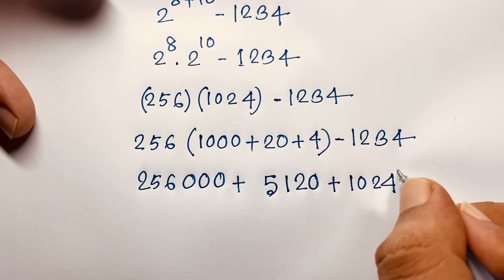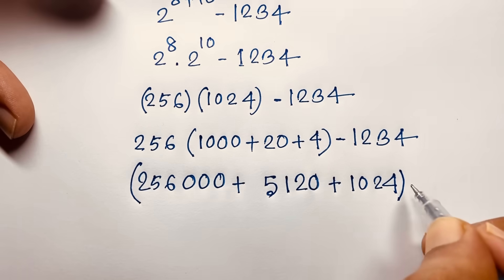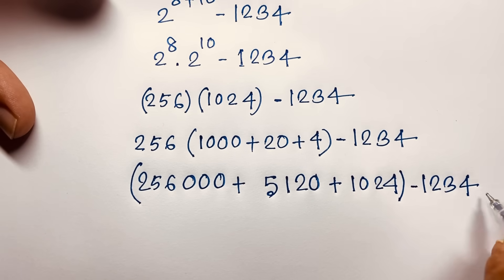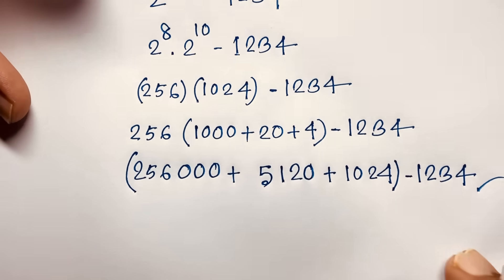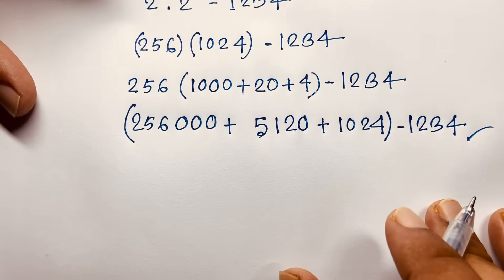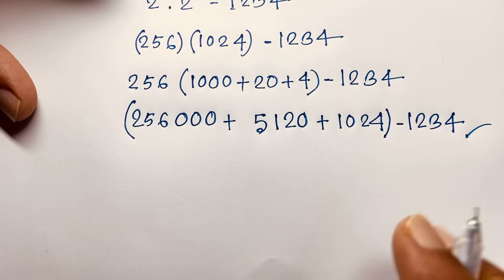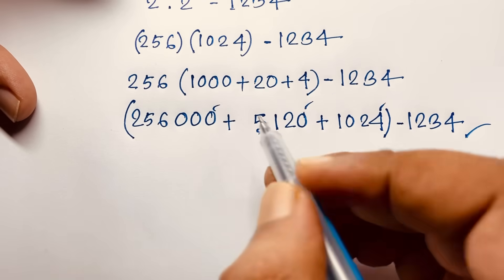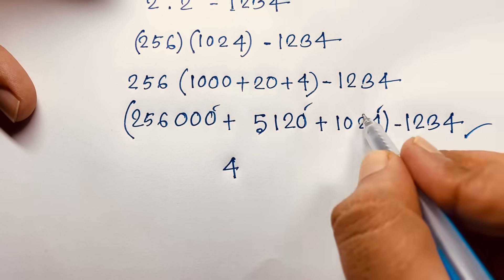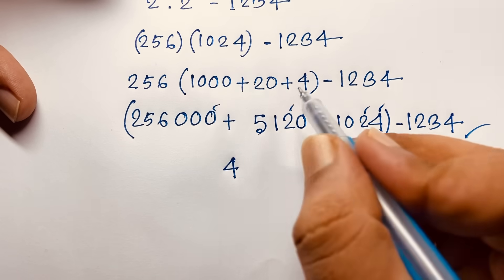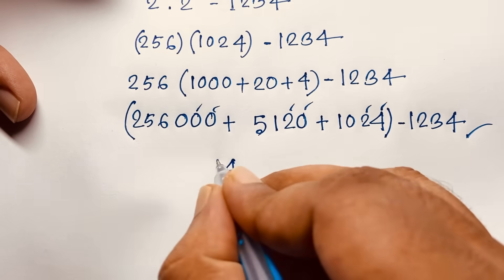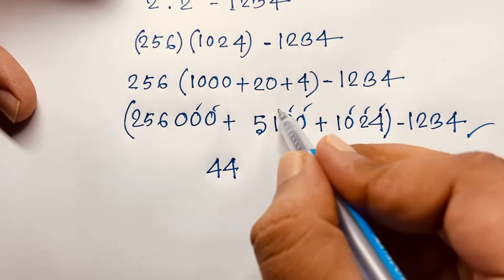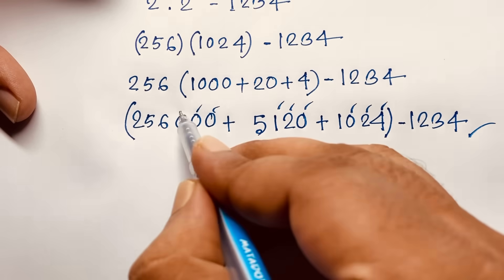And here minus 1234. I solved this question without a calculator — it is an easy math problem. Here: 4 plus 0 plus 0 is 4, 2 plus 2 is 4, 4 plus 0 is 4, then 0 plus 1 is 1.